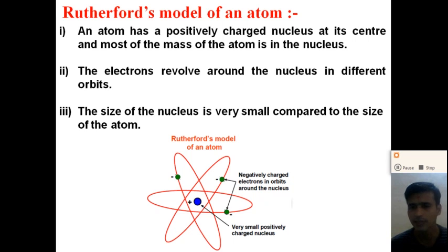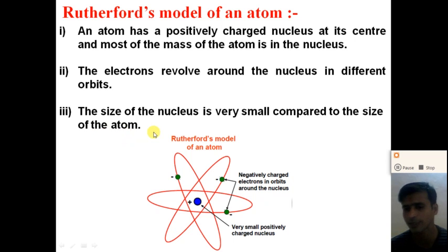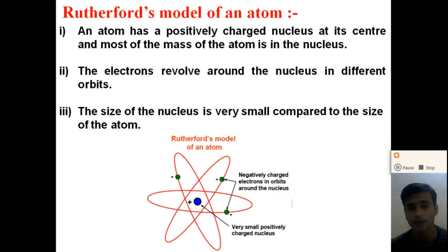The electron revolves in circular orbits — different orbits — around the nucleus. The size of the nucleus is very small compared to the size of the atom. J.J. Thomson estimated the size of the atom as 10 raised to minus 10 meters, and Rutherford estimates the size of the nucleus as about 10 raised to minus 14 meters — very small compared to the size of the atom.